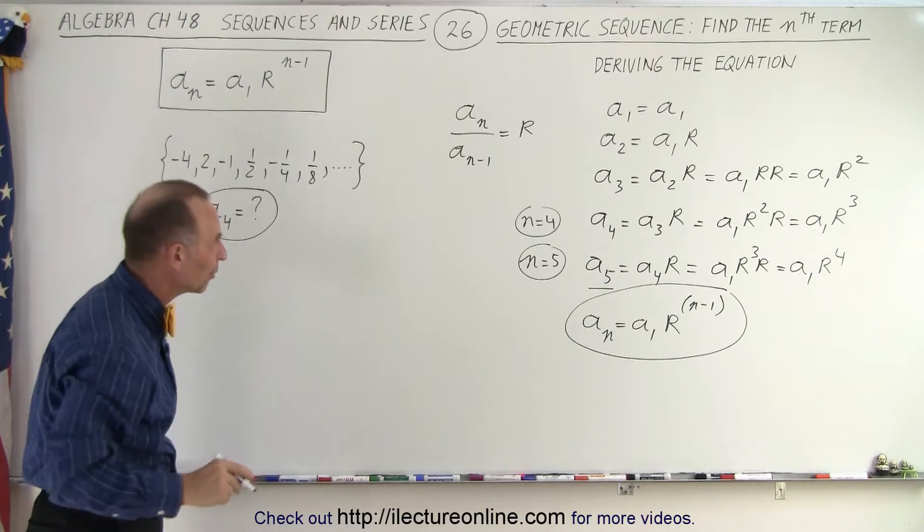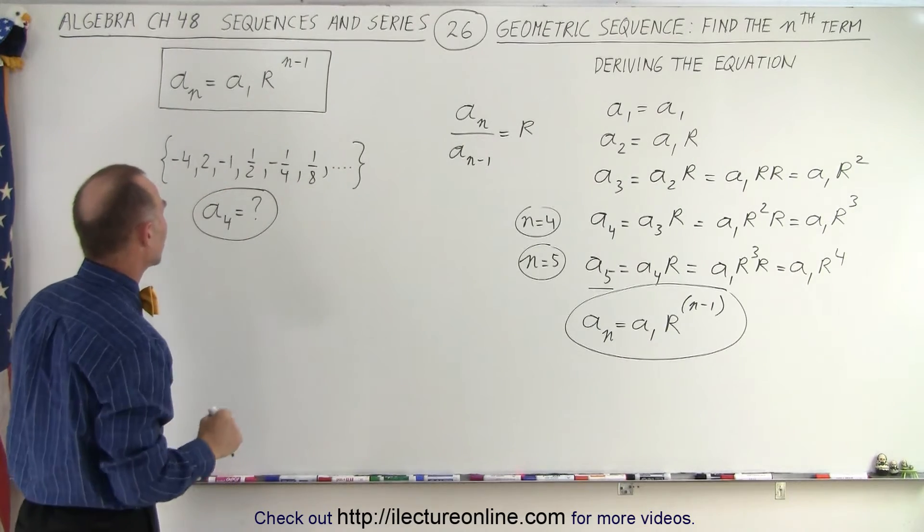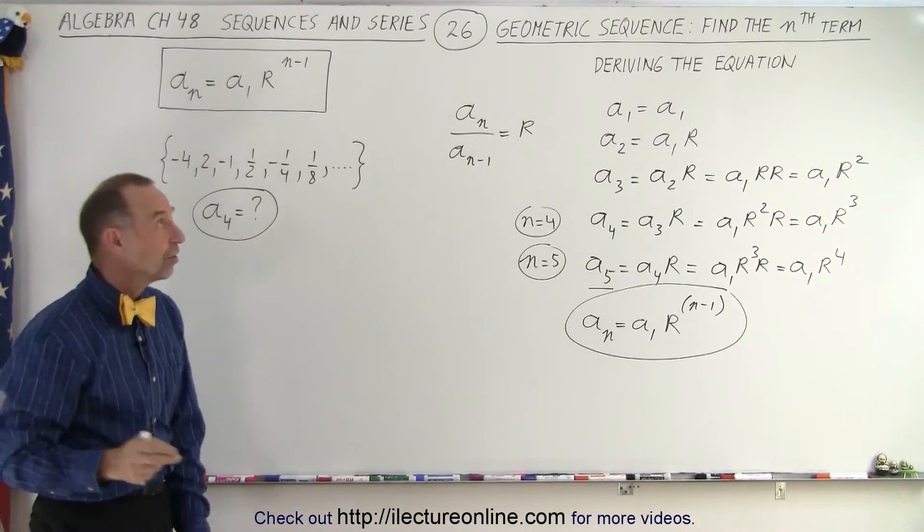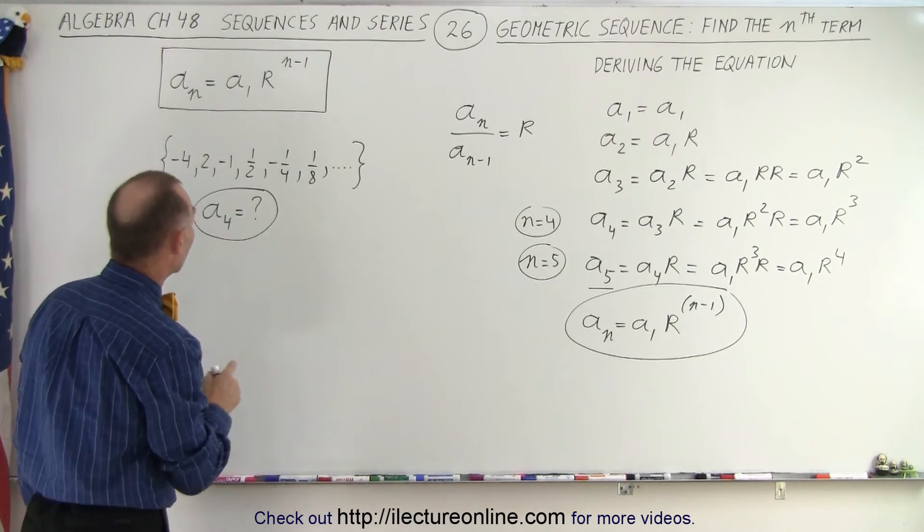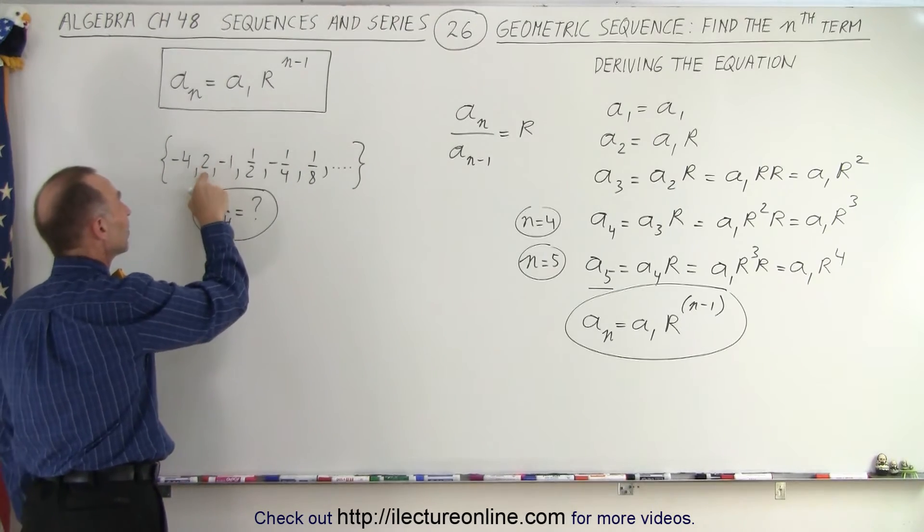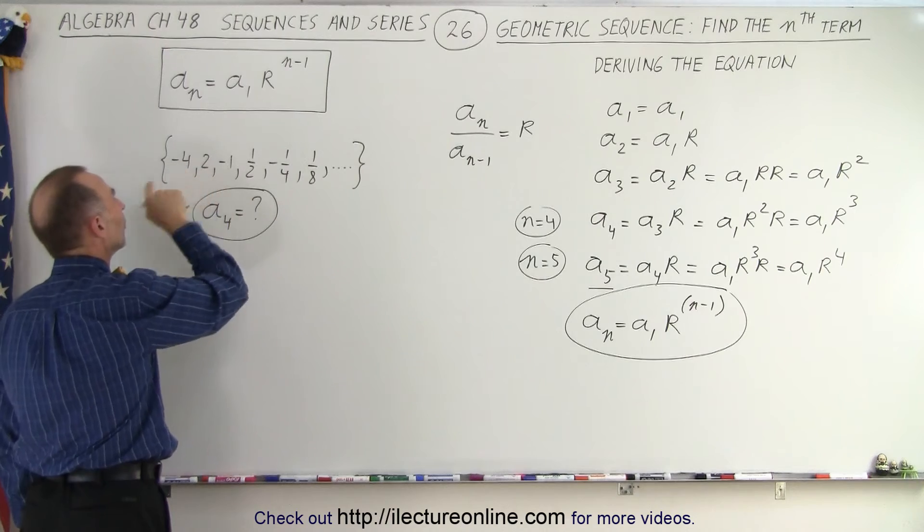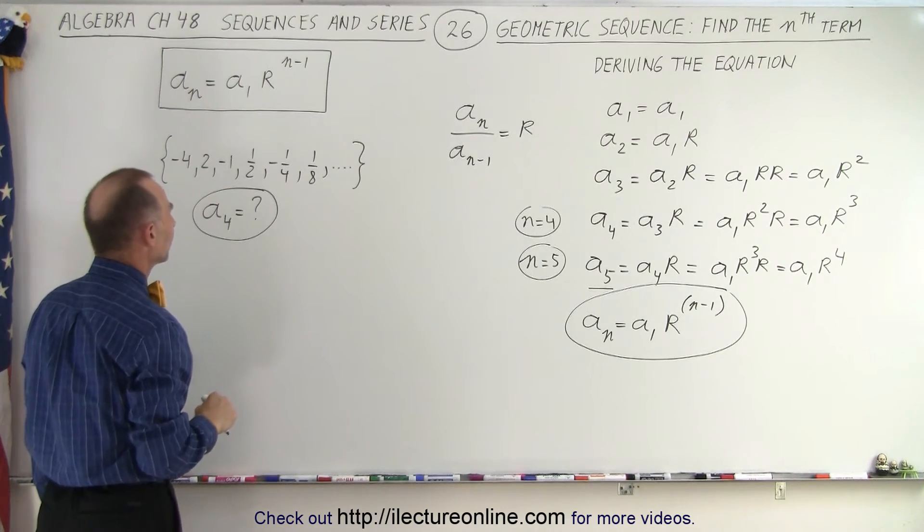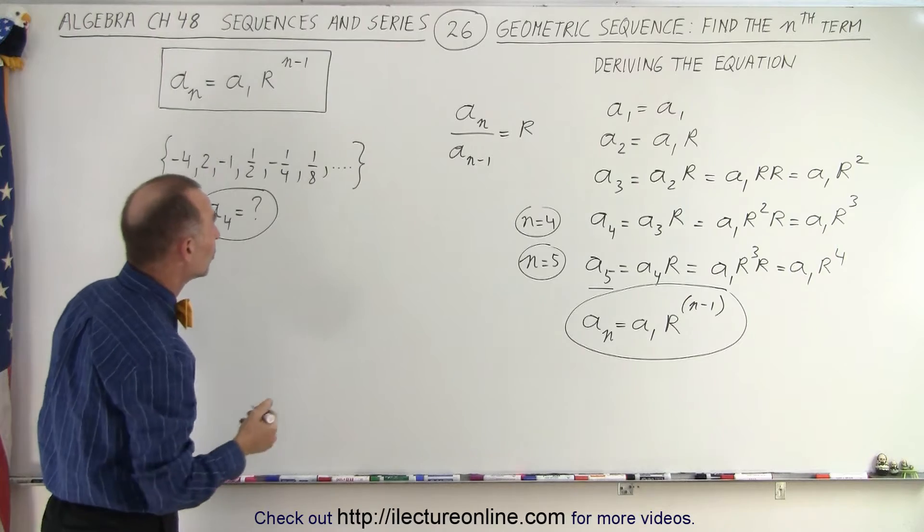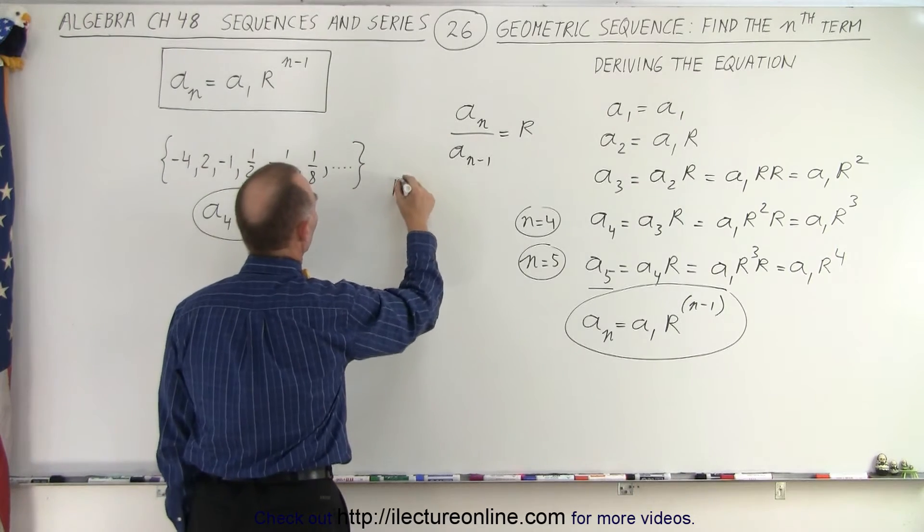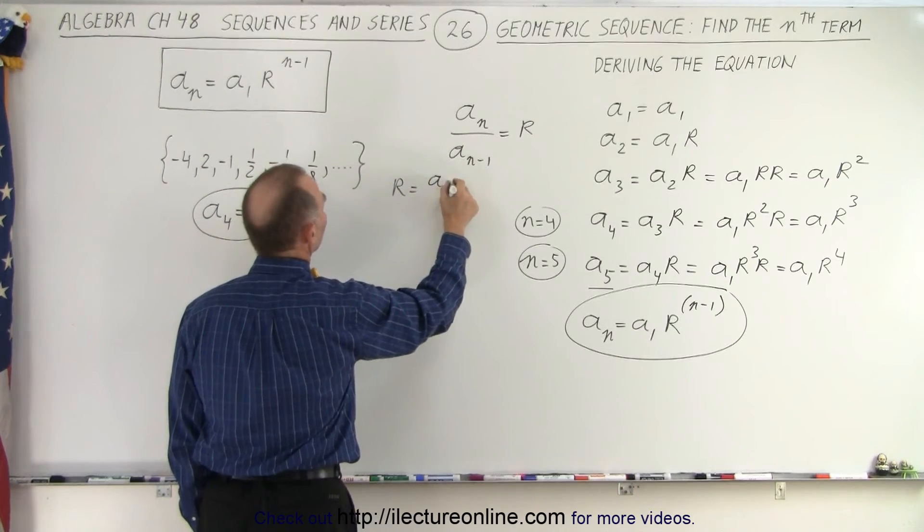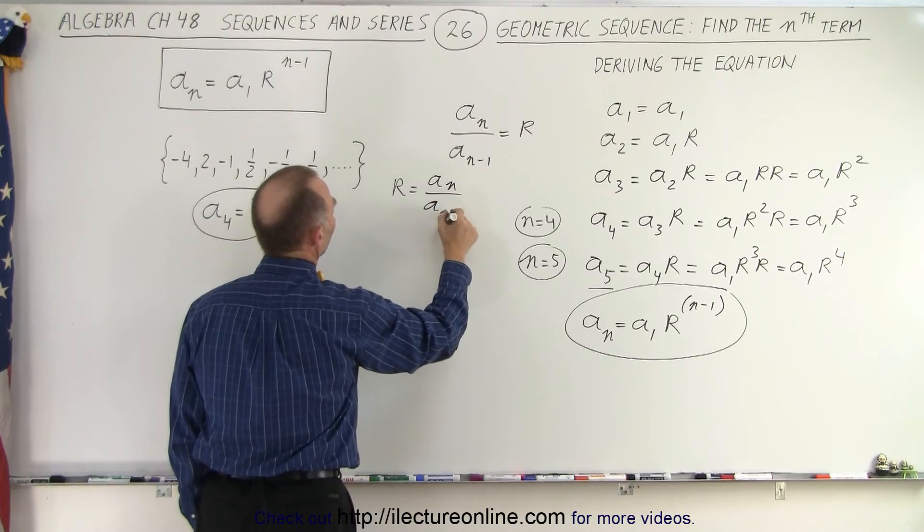Now that we know how we derived it, let's try it one more time on this example right here. Why is this a geometric sequence? Because the next number is a fixed ratio of the previous number. Let's see what that is equal to because we can do it using the equation.